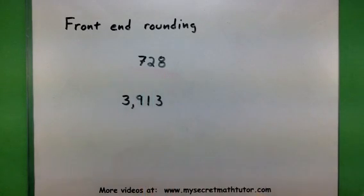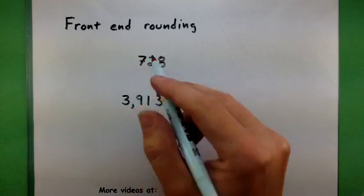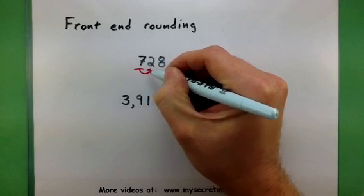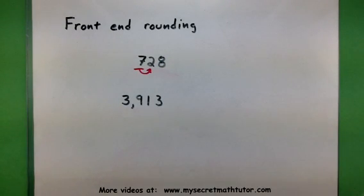So here's the number 728. First, identify the largest place value. That'd be this 7 guy right here. And then, of course, check the number just to the right of it, over here at this 2. Now, the 2 will tell you whether to keep the 7 the same or round it up to an 8.